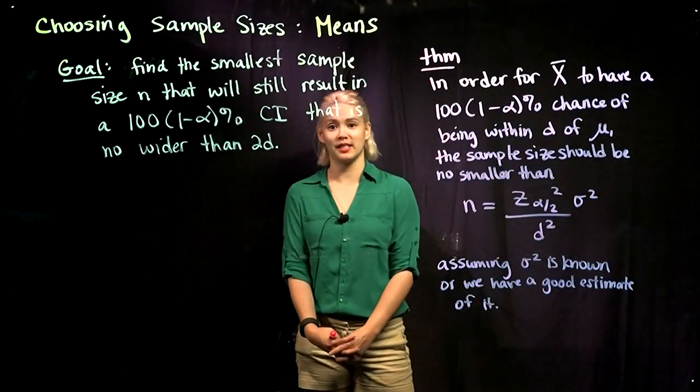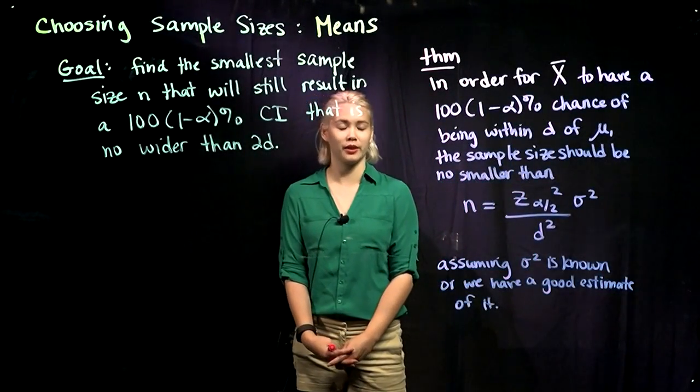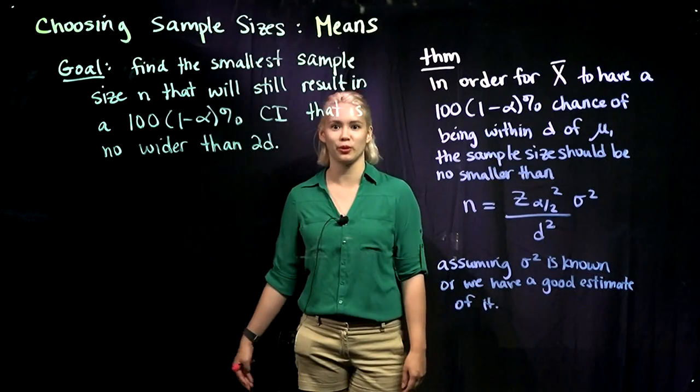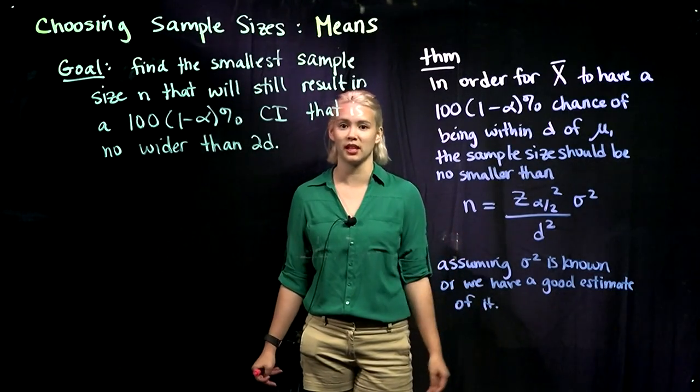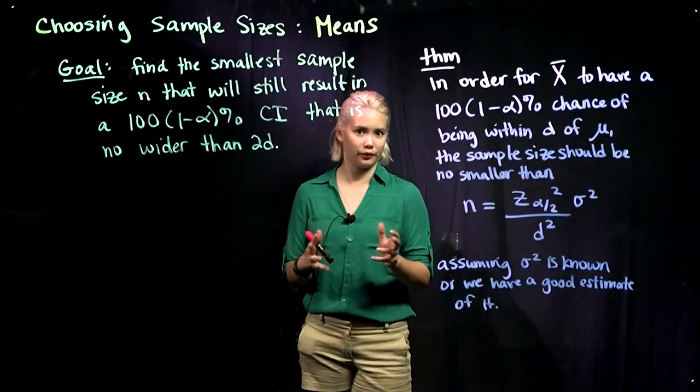We've been talking about choosing sample sizes if we're trying to get a confidence interval for a proportion, and now we're going to switch over to means. We're still trying to choose a sample size based on some kind of restrictions.